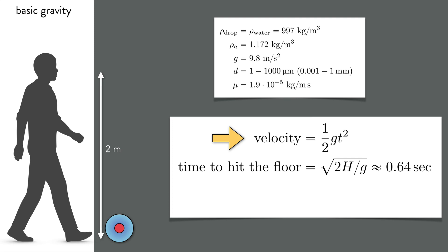In the most basic calculation, you assume that the only relevant force is gravity, and this gives an expression for the velocity, which is integrated, yielding a time to hit the floor. For a height of 2 meters, that's around a sixth of a second. But actually, this calculation is only accurate if the droplet is sufficiently large.